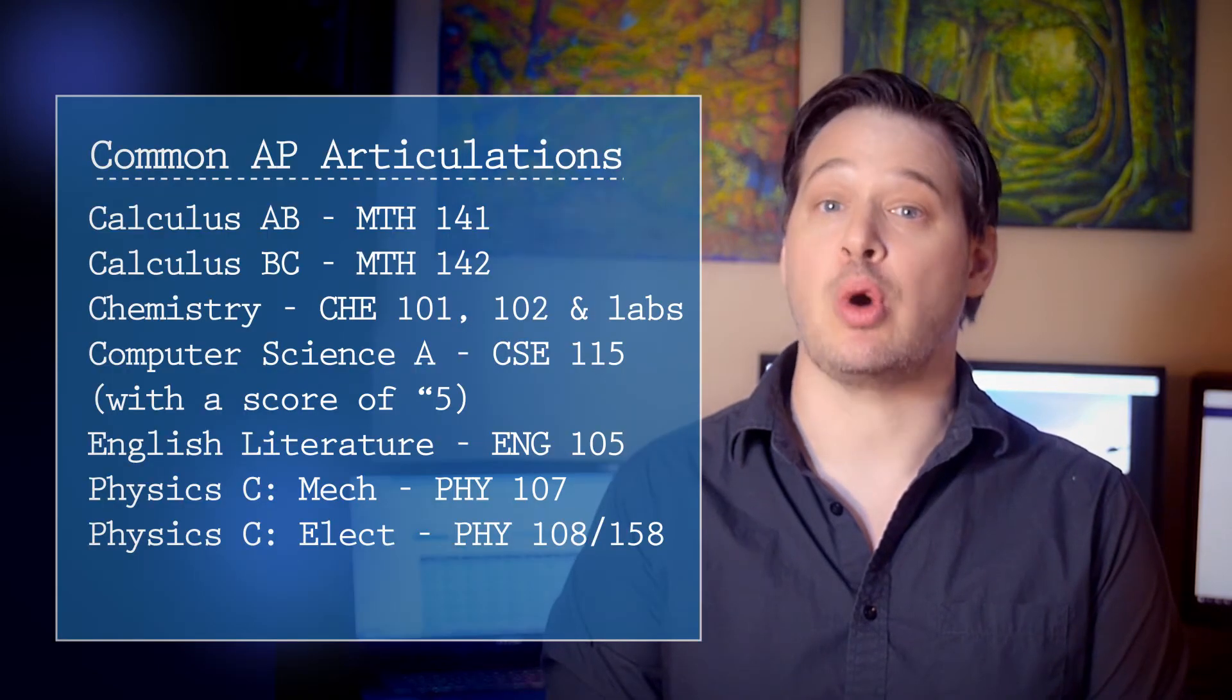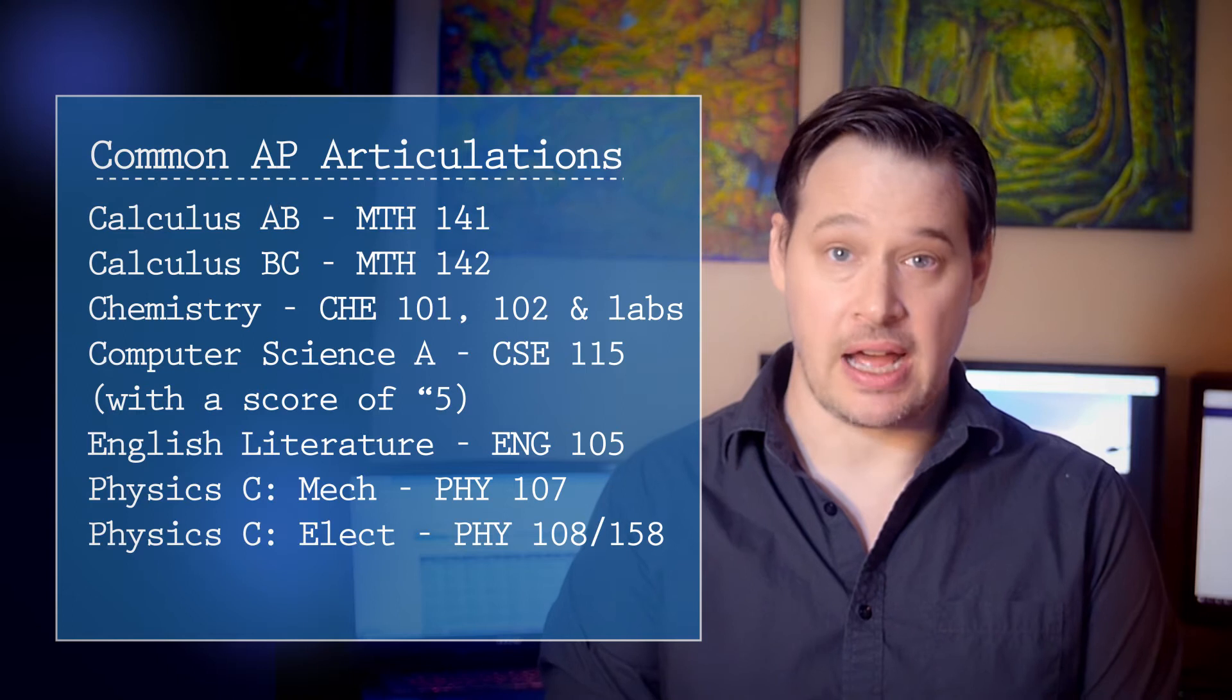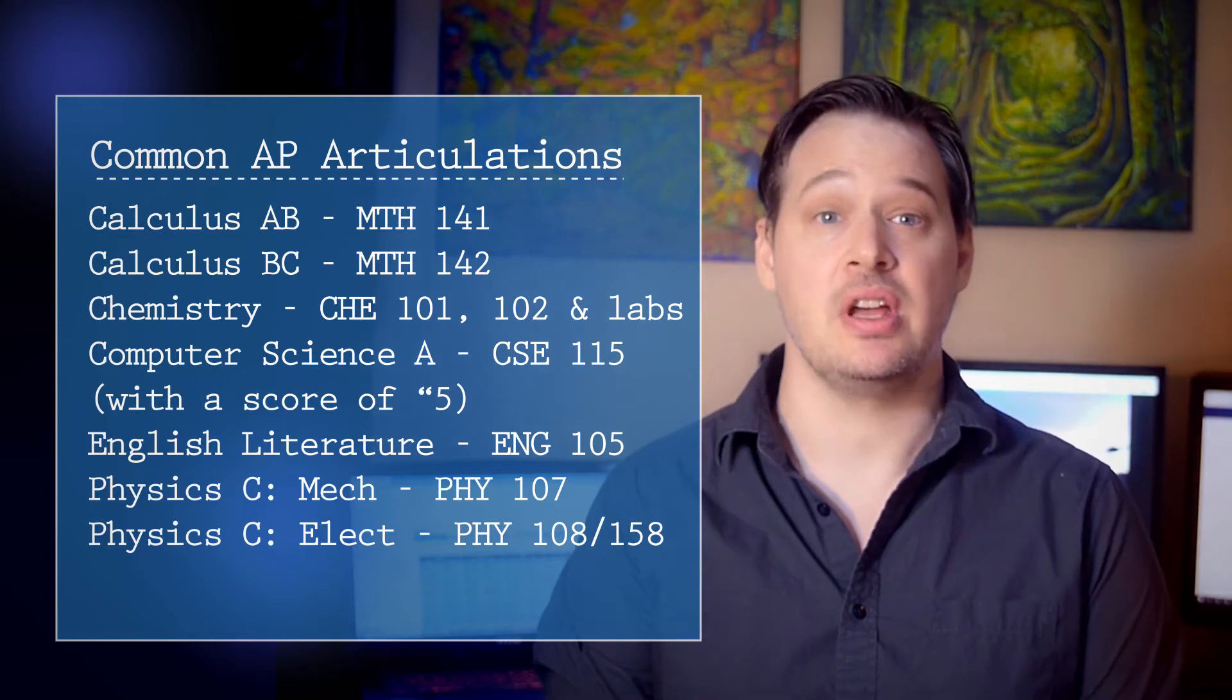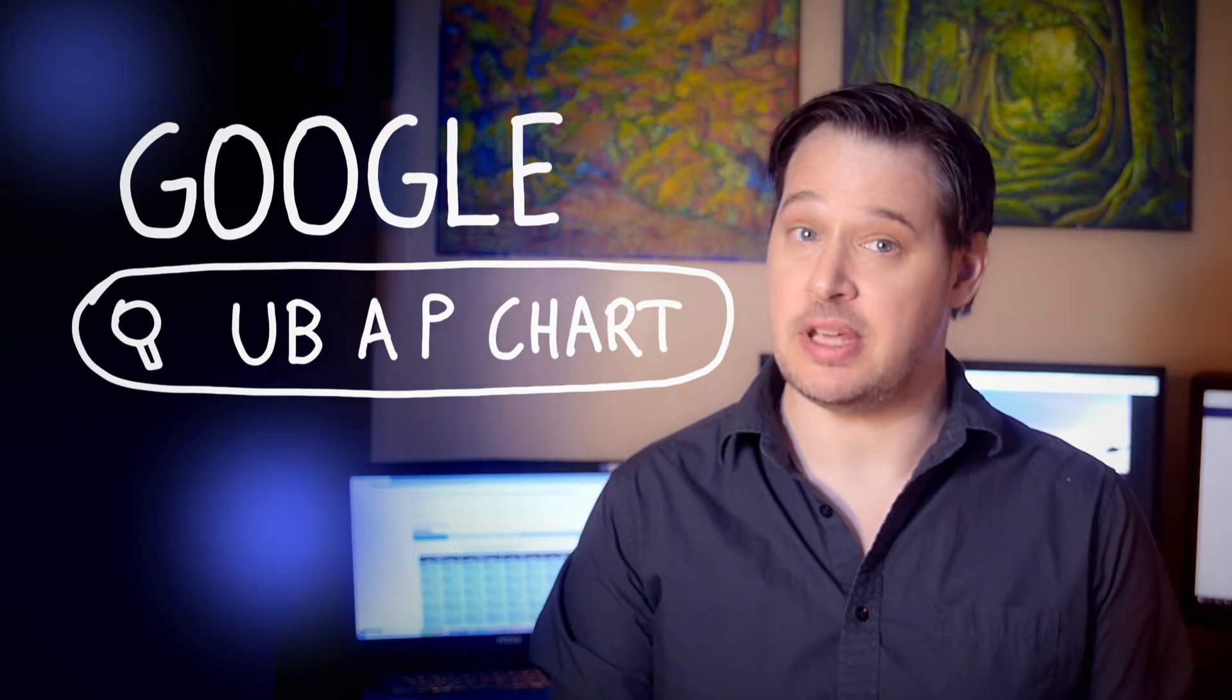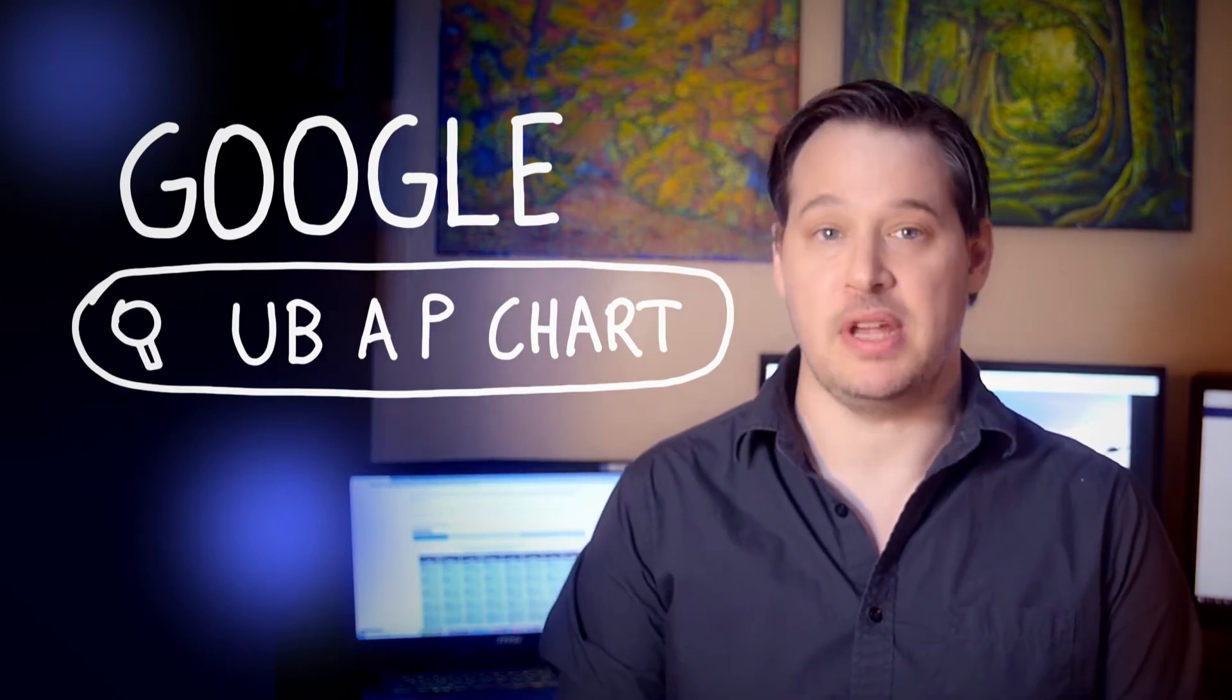Here are some common AP articulations, most requiring an AP score of 4 or 5 to equal UB classes. You can see the whole list of AP equivalents by Googling UB AP Chart. Click on the link and look for the PDF.